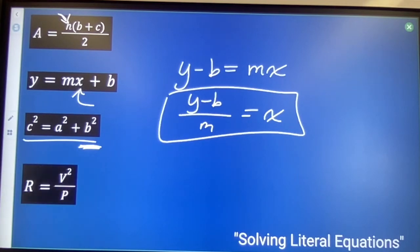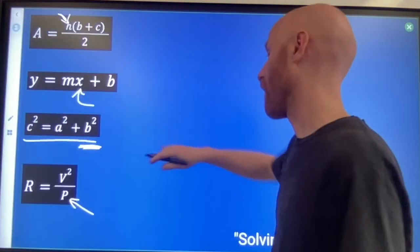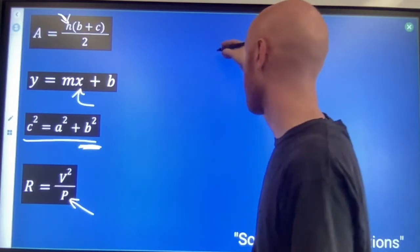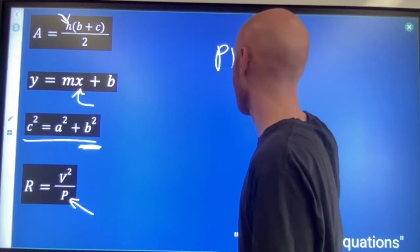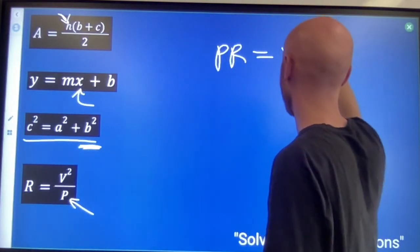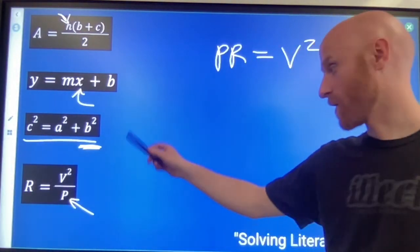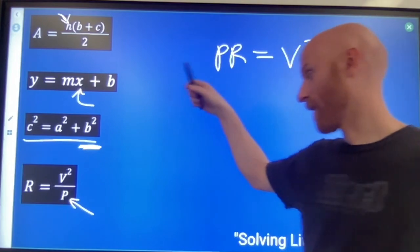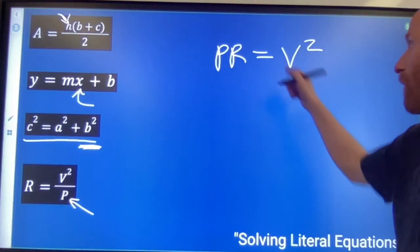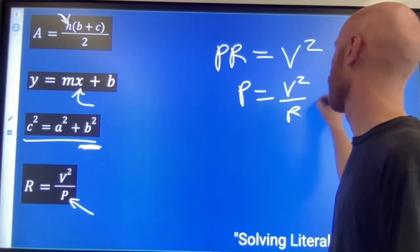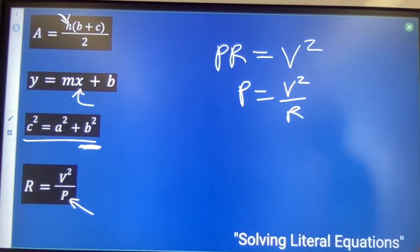Last one down here. What if I want to solve for letter P? I'm gonna actually multiply by P on both sides to get P out of the denominator. So PR equals V squared. This is from electrical shop by the way. Resistance equals voltage squared divided by power. Divide both sides by R. Voltage squared over the resistance equals the power.